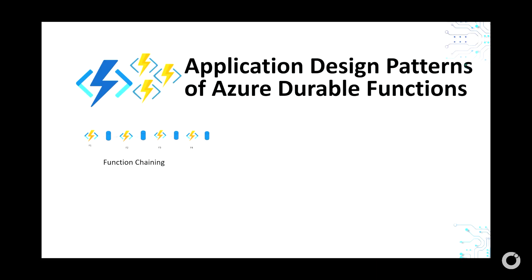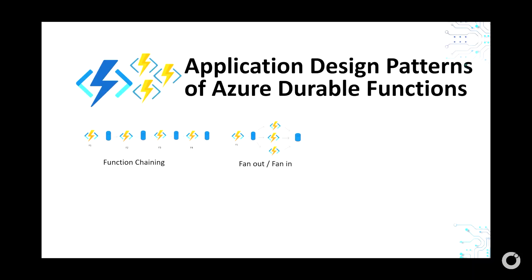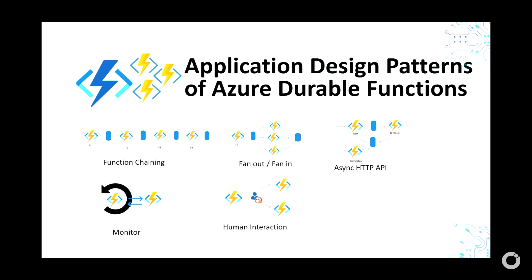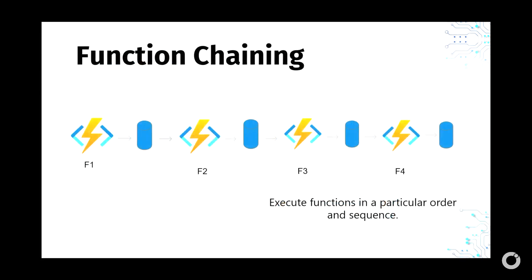There are six documented patterns for Durable Functions. Patterns help you think about different application architectures. The six patterns are: function chaining, fan out/fan in, async HTTP API, monitor pattern, human interaction pattern, and the aggregator pattern. You can combine them — use one, two, or multiple patterns depending on what you're trying to solve.